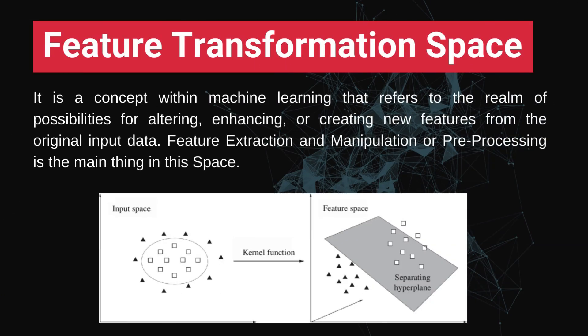The last technique is feature transformation space. This means you can do some kind of pre-processing, data manipulation, or feature extraction on your features to generate new features, create interactions, or perform any kind of operations on your features. You transform your features here to make them better understandable by the machine learning model.